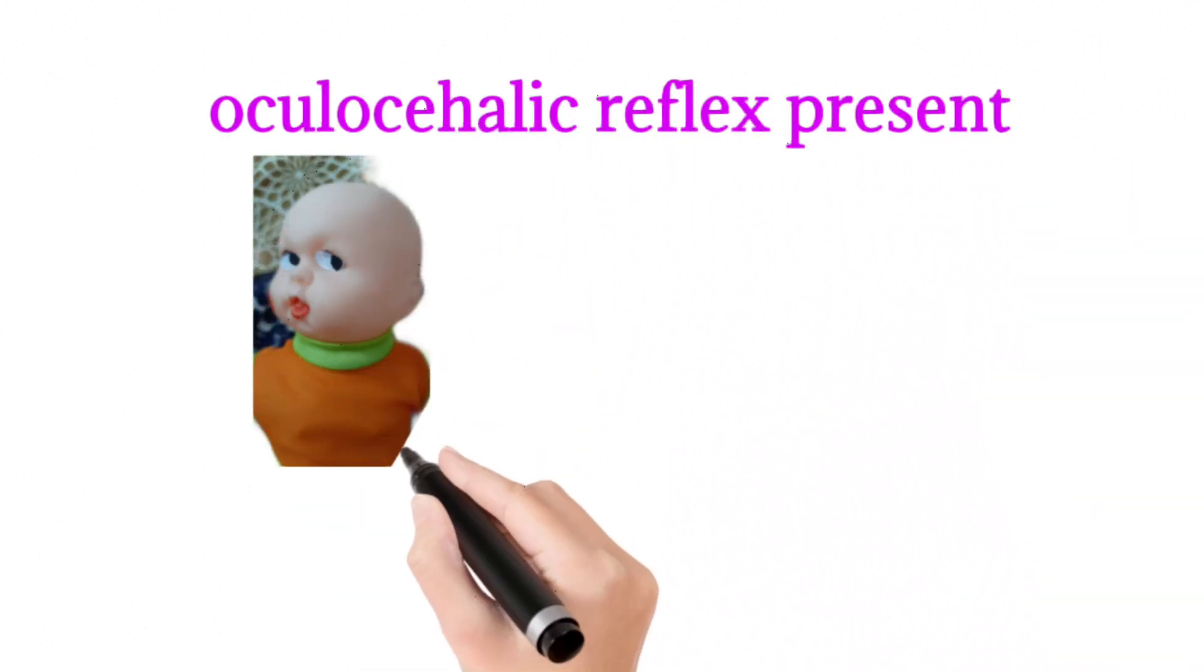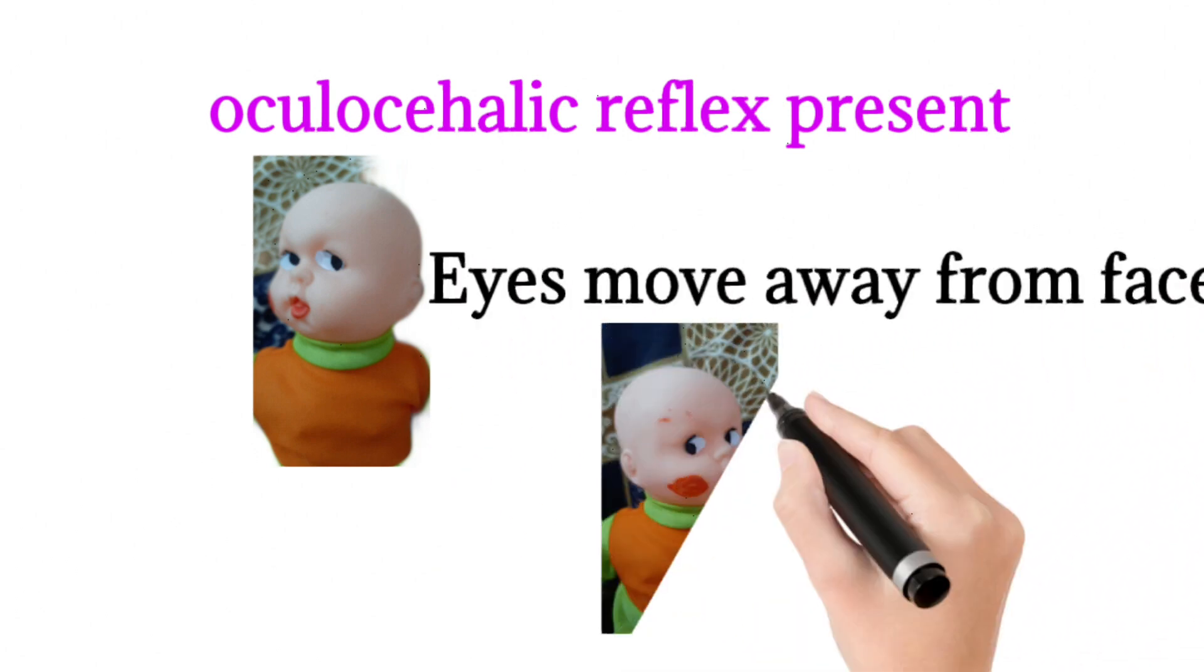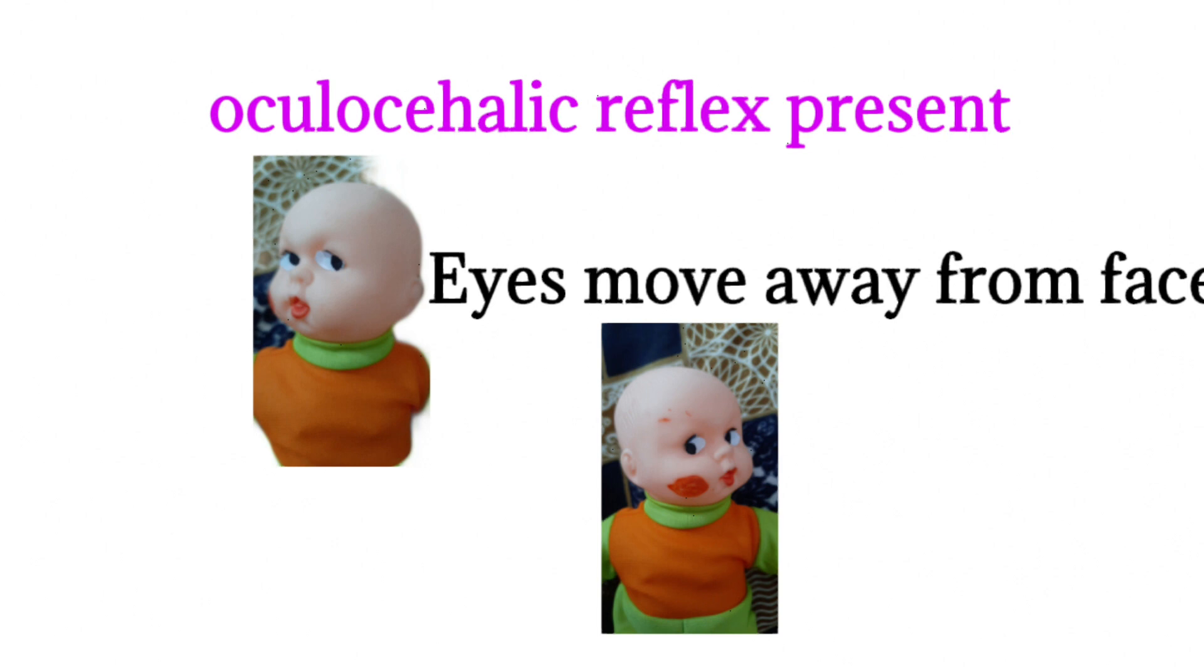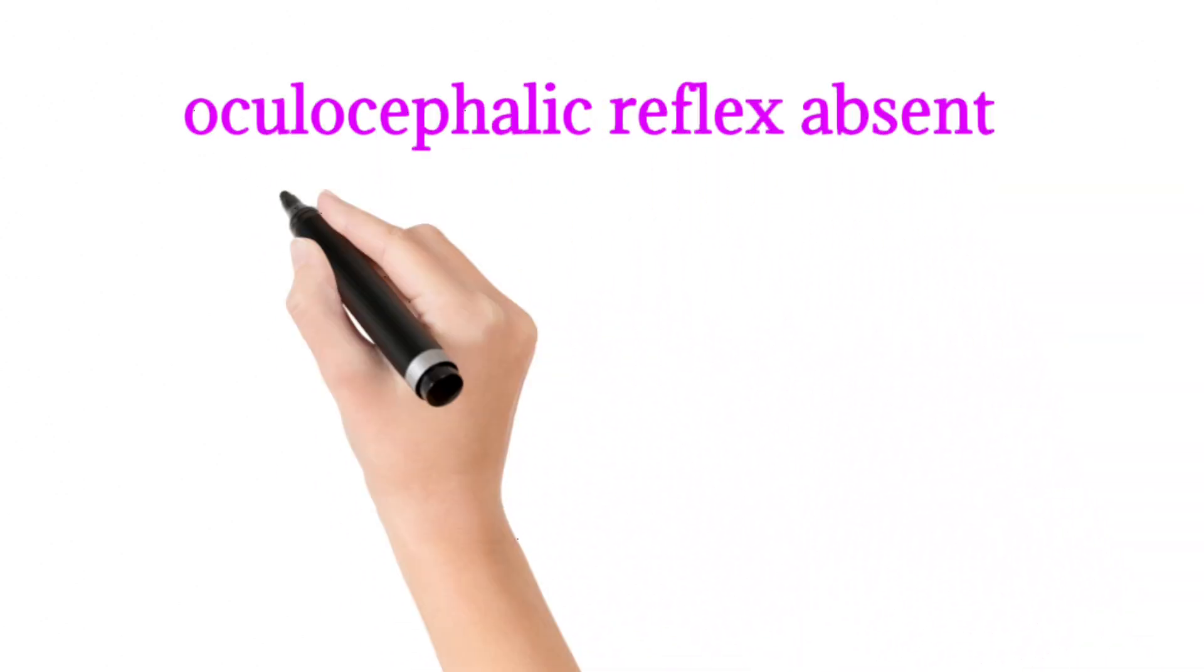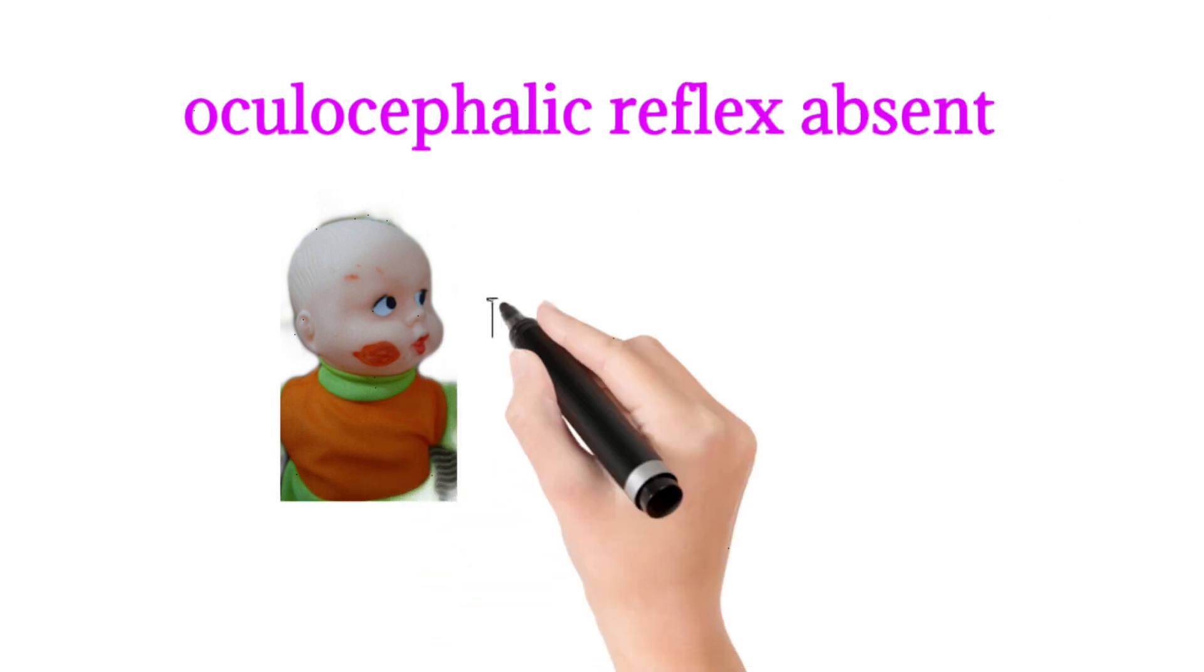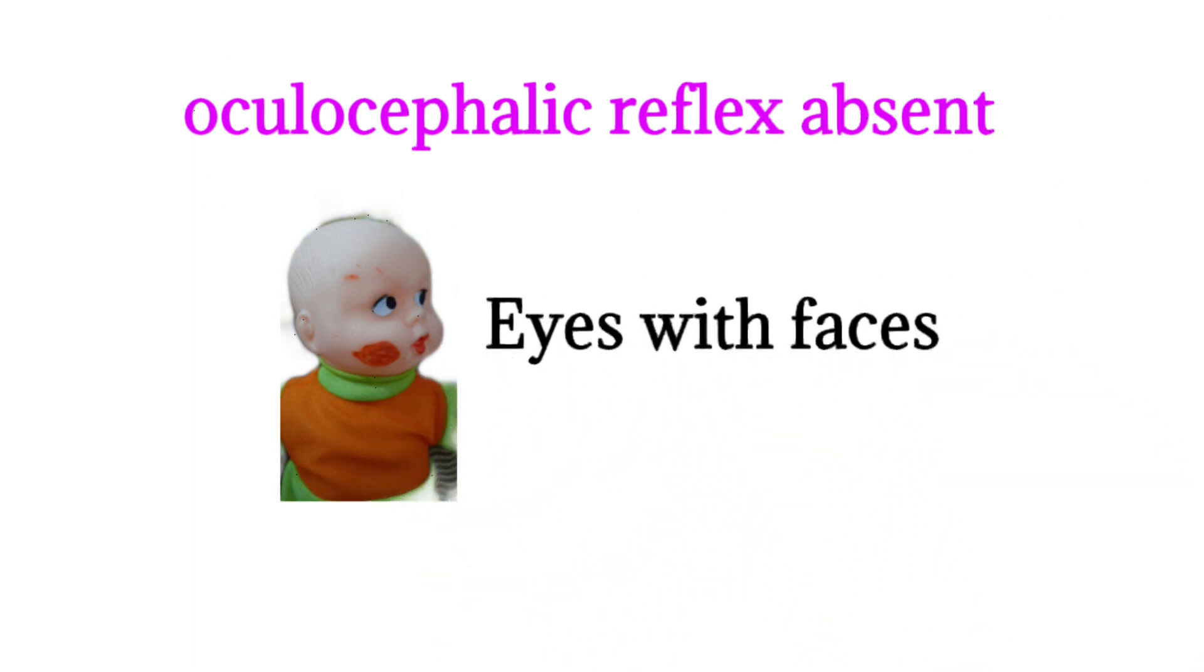So if oculocephalic reflex is present, the direction of eye moves away from the face. Here you can see the picture. If we turn the baby's head towards the right side, eye moves to the left side. If oculocephalic reflex is absent, then eye moves towards or in the direction of face. That is, eye with face.